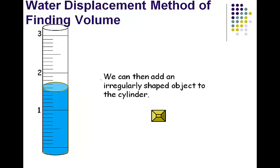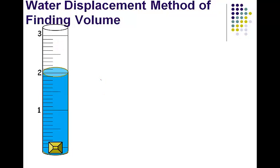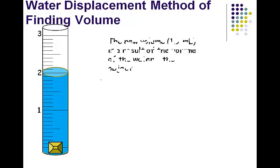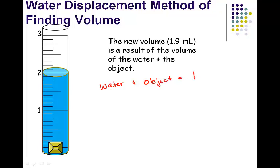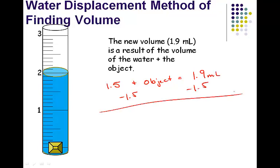If we have an irregularly shaped object, we can take it and place it into the graduated cylinder. Once we put it in, that water level is going to rise. Now that we have the new volume of 1.9 milliliters — this is the result of the water plus the object. We know the volume of the water when we first measured was 1.5 milliliters. So to solve for the volume of the object, we subtract 1.5, and the object's volume is 0.4 milliliters.